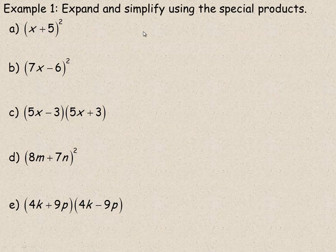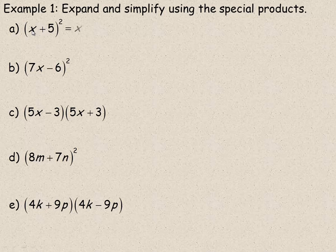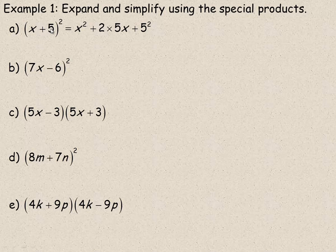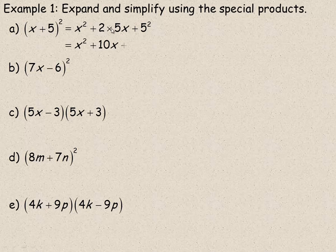On to some examples. We're squaring a binomial here. So we would start with x squared at the beginning. The linear term comes from doubling x times 5, so we're doubling 5x, and then 5 squared at the end. So x squared plus 10x plus 25.